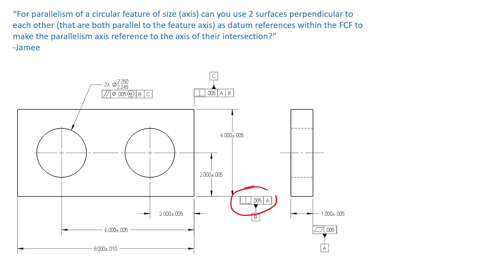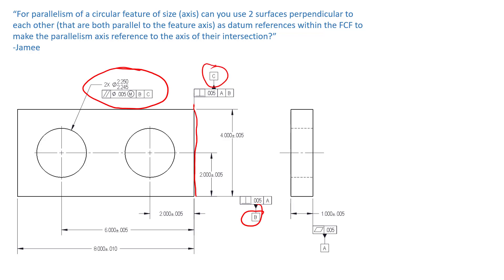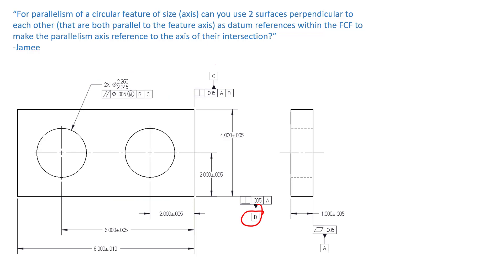Now let's look at the actual parallelism. B and C are perpendicular to each other, and I have the parallelism only to B and C — I have not used A in the datum reference frame, only B and C. Jamie had asked about making the parallelism axis reference to the axis of the intersection. In a roundabout way, that is correct — where this plane and this plane intersect, we have an axis right there in that corner.